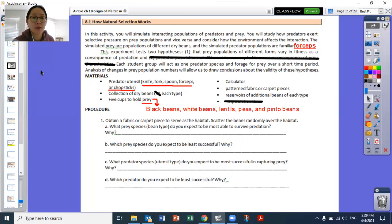This experiment tests two hypotheses. One, that prey populations of different forms vary in fitness as a consequence of predation, aka different prey survive better when predators have different abilities to pick them up. If you would work in groups in person, then you would be having one group act as a predator species and forage for prey over a time period. And then you would analyze the changes in prey population numbers after and before to draw conclusions about how valid this hypothesis is.